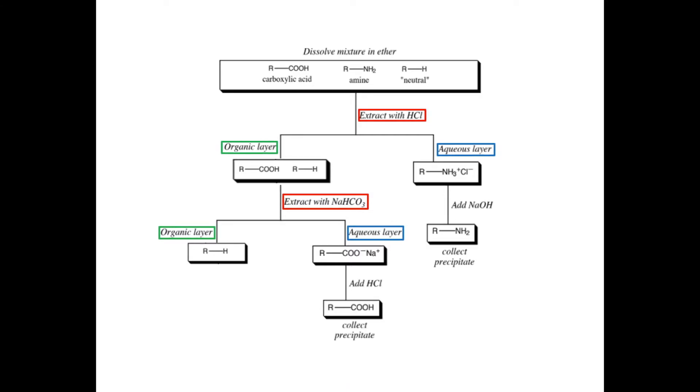Again, with that aqueous layer, we're going to take the carboxylic acid fraction. We're going to react it with HCl again, which will then convert the conjugate base back into the acid. That becomes insoluble in the aqueous solution. And you get a precipitate again, but this time it's the carboxylic acid that has been removed from your mixture.